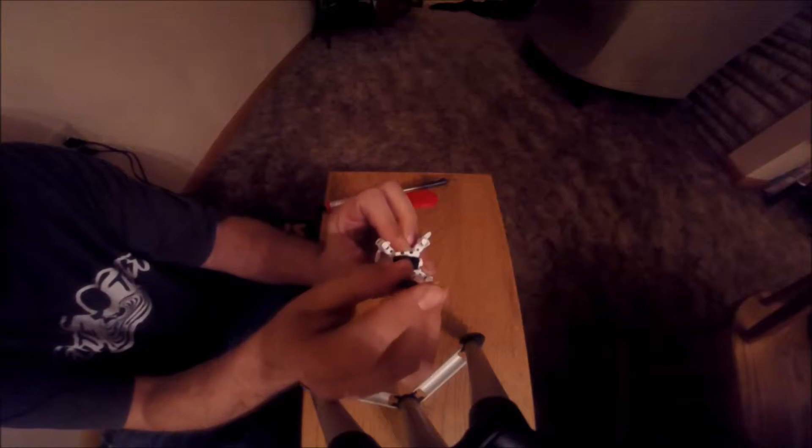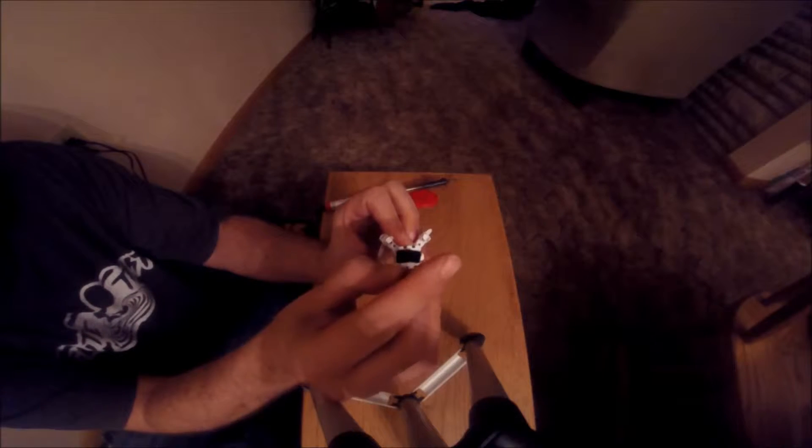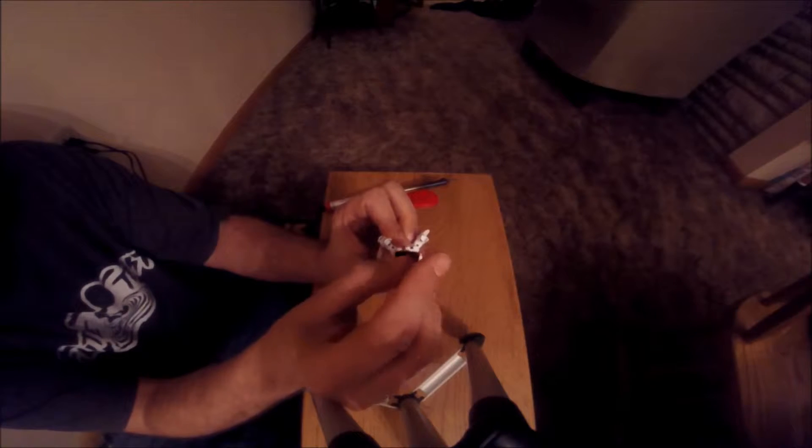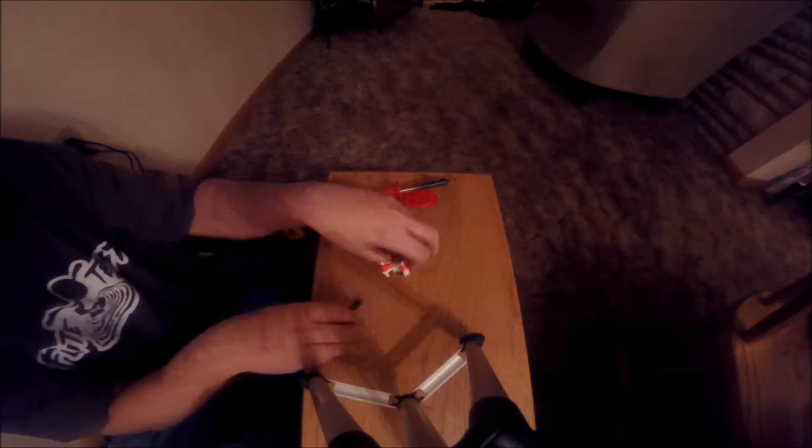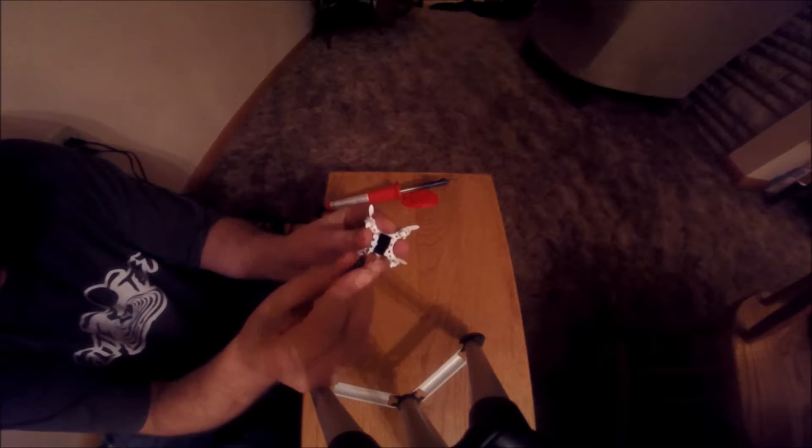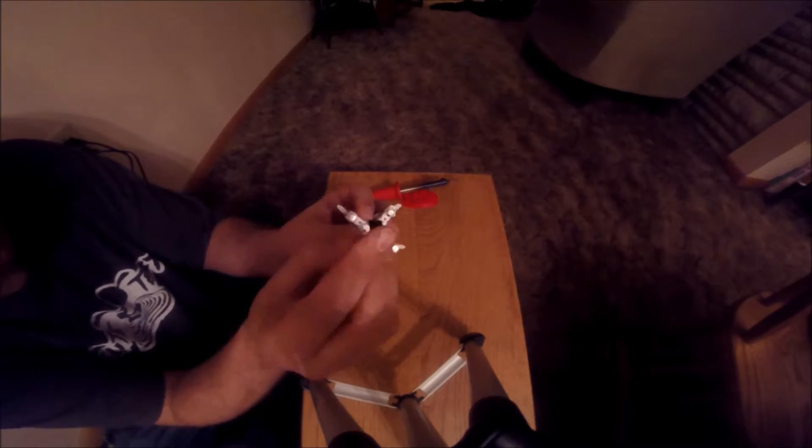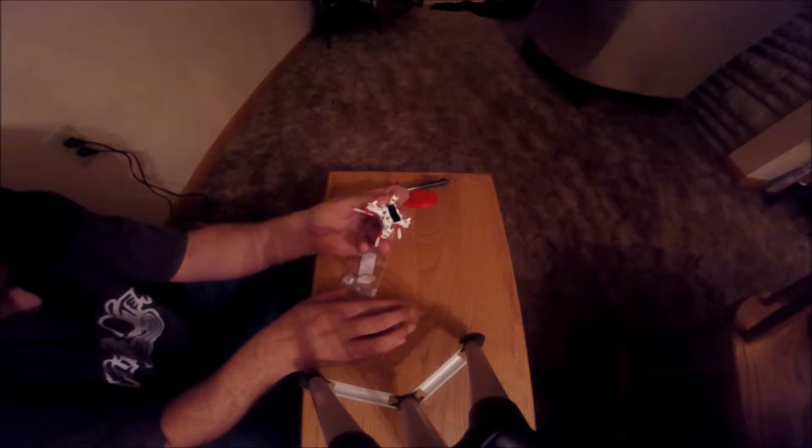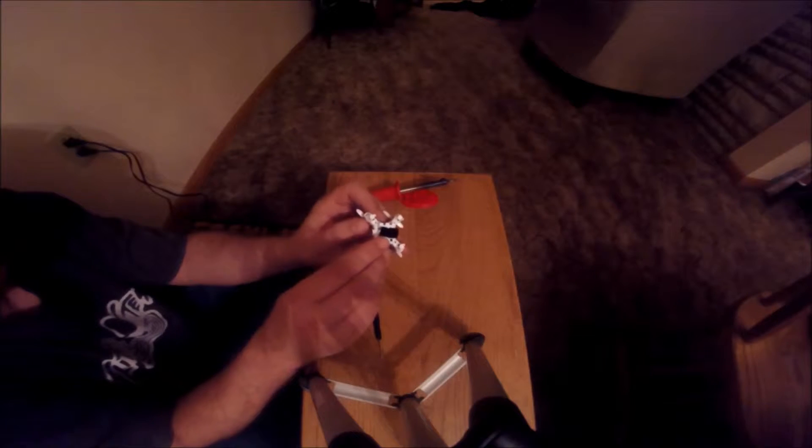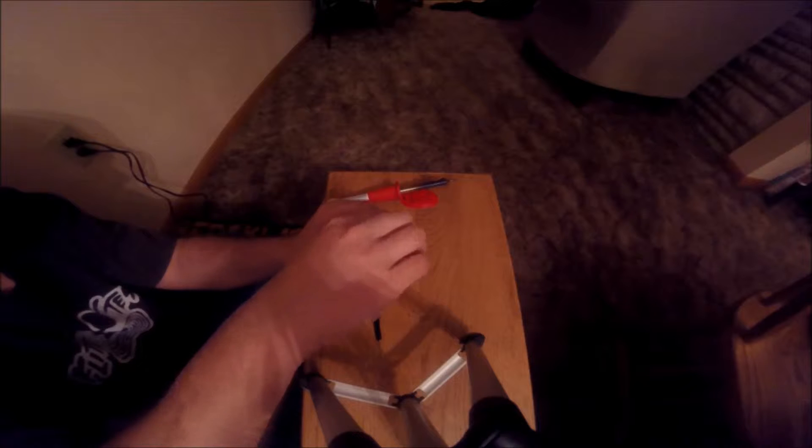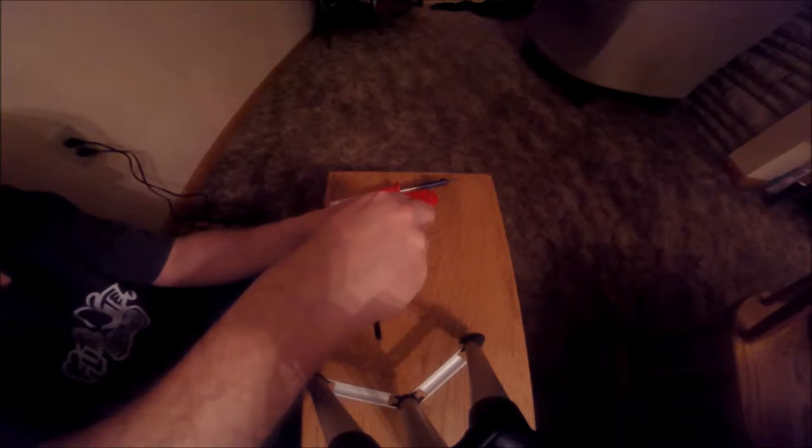Next you want to remove the tiny screws with the screwdriver. It's a Philips 00 screwdriver. Make sure to be careful with the tiny screws, they get lost very easily. Once your screws are removed, you should be able to gently separate the bottom plastic piece from the top piece, which will expose the flight controller and the battery.